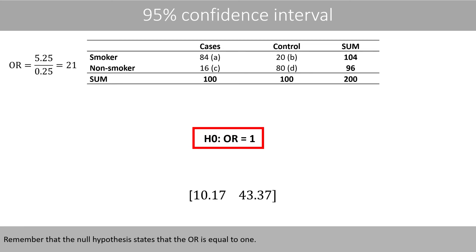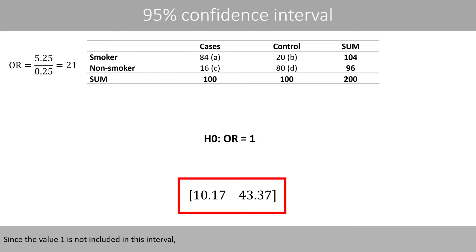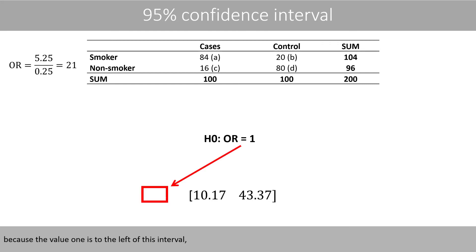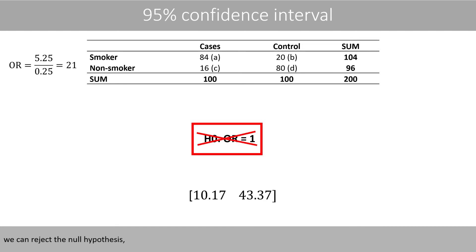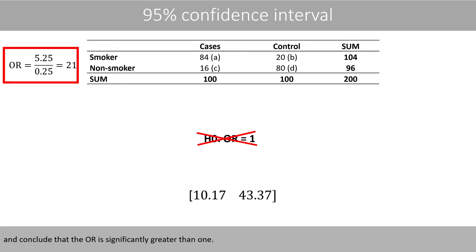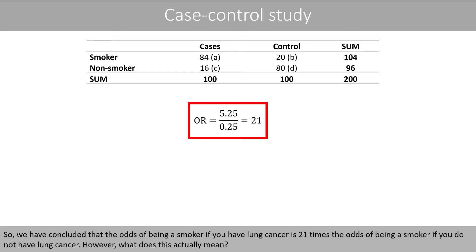Remember that the null hypothesis states that the odds ratio is equal to 1. Since the value 1 is not included in this interval — because the value 1 is to the left of this interval — we can reject the null hypothesis and conclude that the odds ratio is significantly greater than 1. So, we have concluded that the odds of being a smoker if you have lung cancer is 21 times the odds of being a smoker if you do not have lung cancer.